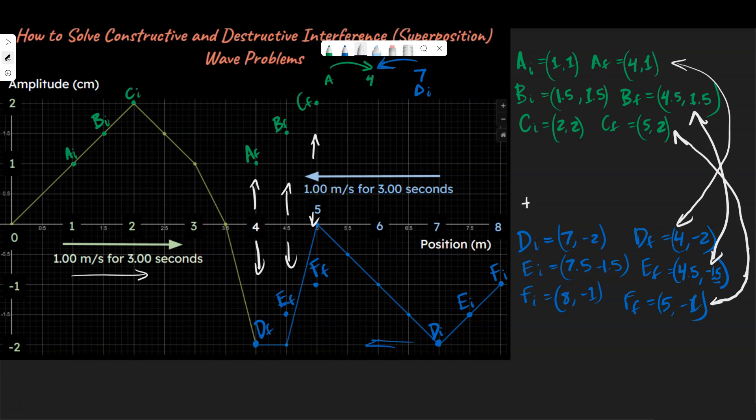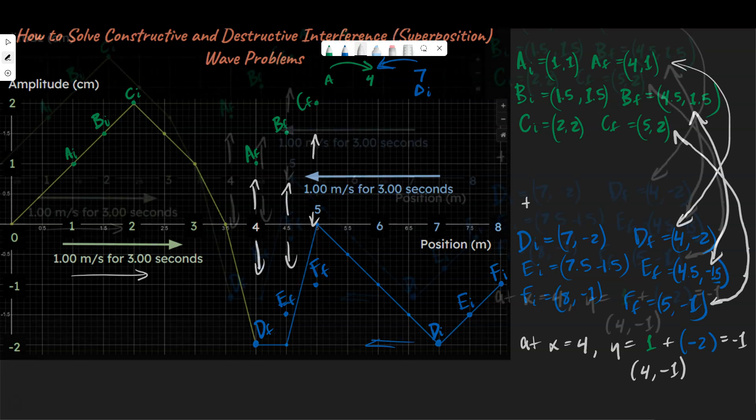At x equals 4, let's say for a final position, y equals the sum of the amplitudes of the green wave and the blue wave. At x equals 4, we have a positive 1 plus a negative 2, and so that value ends up being negative 1. So we're going to write the coordinate point of (4,-1). That means our resultant graph must have a point at (4,-1).